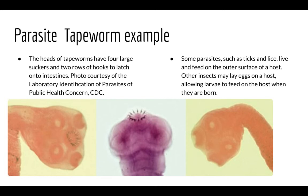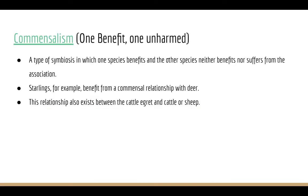Our last category is commensalism — a type of symbiosis in which one species benefits and the other species neither suffers nor benefits from the association. The second organism is just part of it; it doesn't really do anything, doesn't gain anything. This relationship also exists between cattle egrets and sheep.